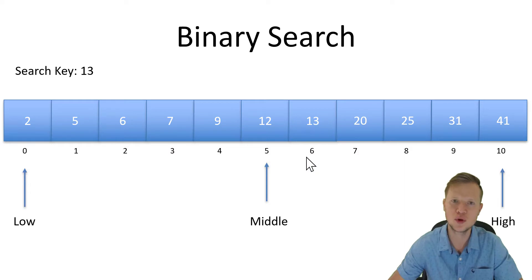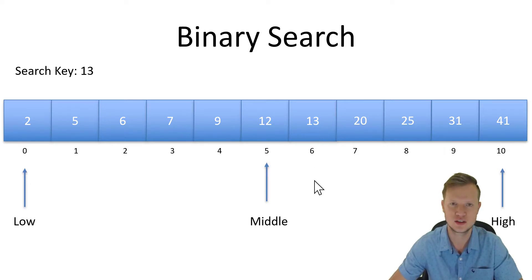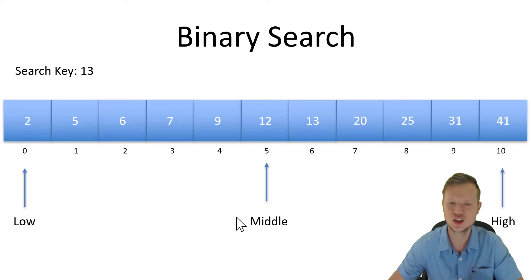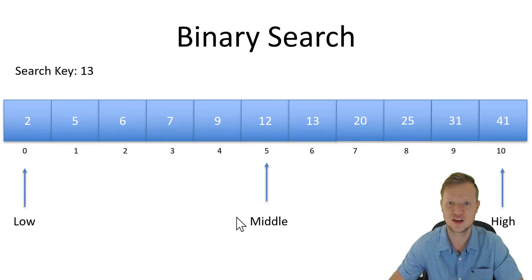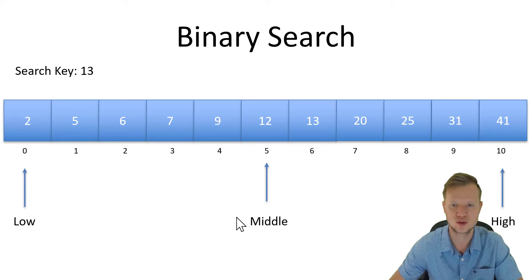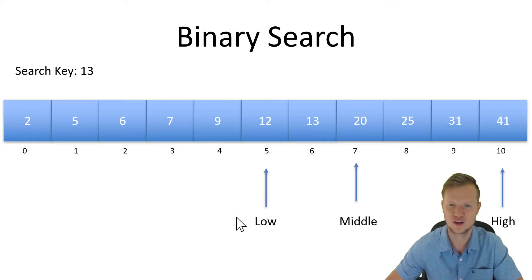In a normal linear search we would start at index 0 and compare each element until we find 13. But binary search works differently. We define low, high, and middle, then ask: is the search key bigger than the middle value? We're searching for 13 and the middle value is 12, so is 13 bigger than 12? Yes. So 13 is bigger than the middle value, so we redefine the middle index as the new low and find a new middle.